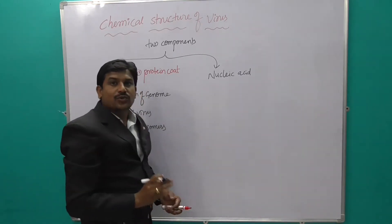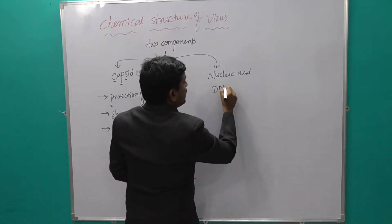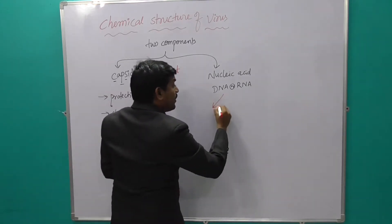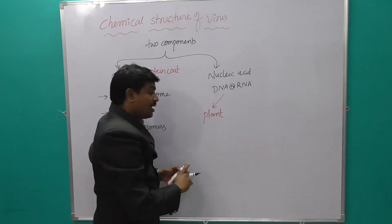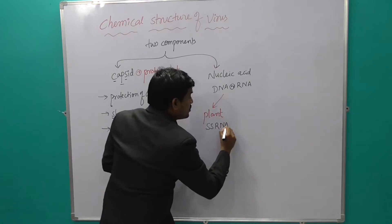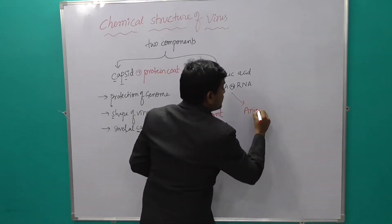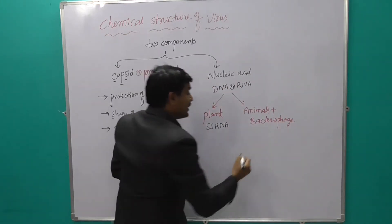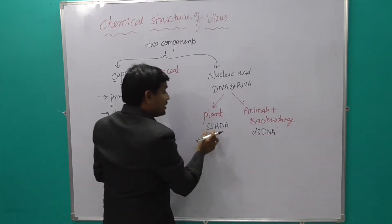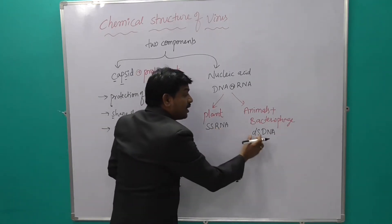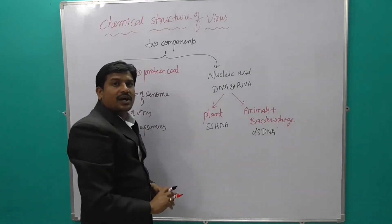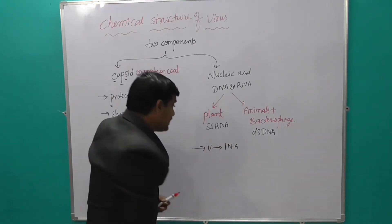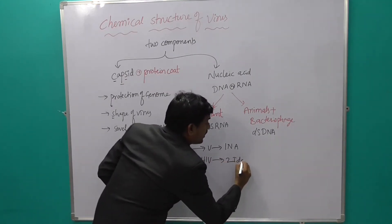The second component is nucleic acid — either DNA or RNA; if anyone is present, DNA or RNA. The virus which infects the plant has single-stranded RNA (SS RNA). The virus which infects animals, as well as the bacteriophage, has double-stranded DNA (DS DNA). The virus has only one nucleic acid, but HIV has two identical RNAs.